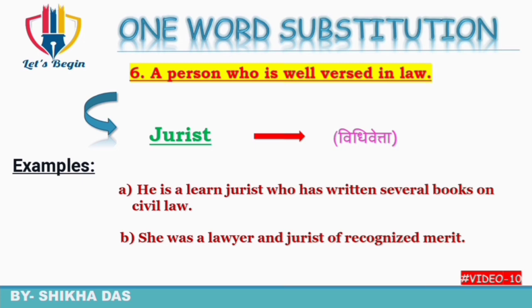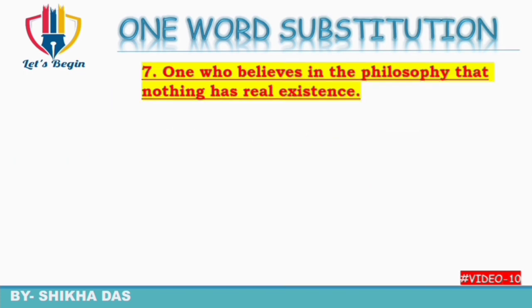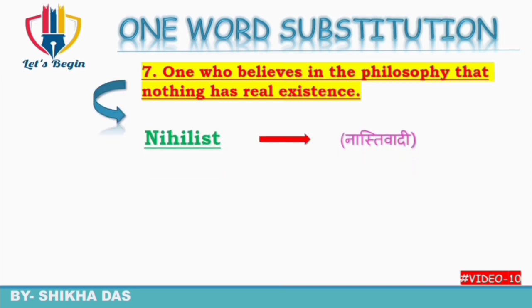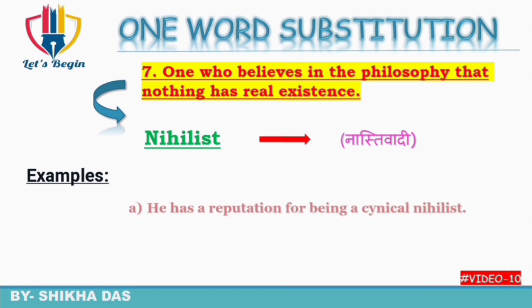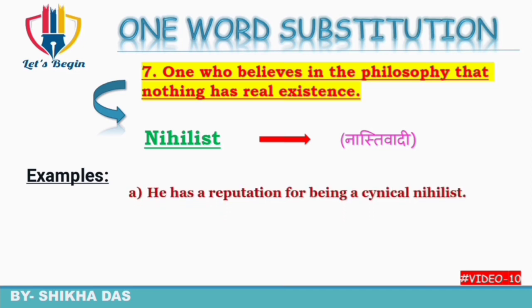Next: one who believes in the philosophy that nothing has real existence — aisa insaan jo is philosophic vishwaas mein believe karta hai ki kisi bhi cheez ka real existence nahi hai. Isko one word mein kahenge 'nihilist', yaani ki 'nastivadi'. Is word ko 'atheist' ke saath confuse mat kijiyega — atheist wo hota hai jo God ki existence ko nahi maanta, jabki nihilist wo hota hai jo life ki existence ko hi nahi maanta. Example: 'He has a reputation for being a cynical nihilist.'